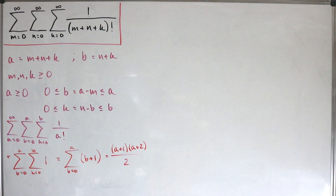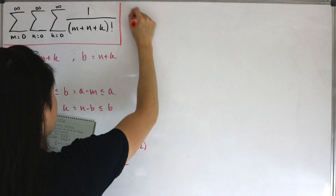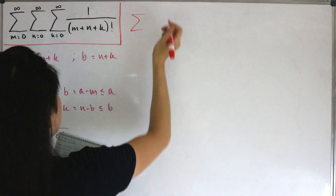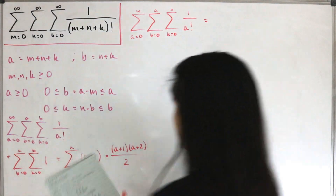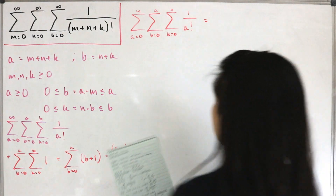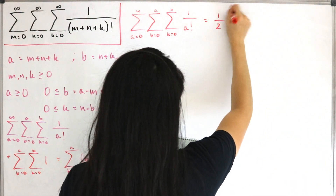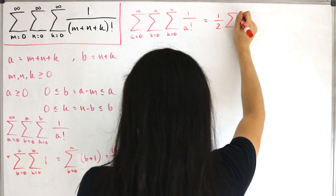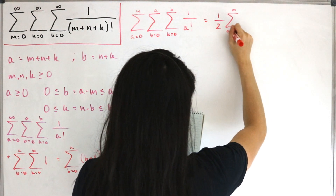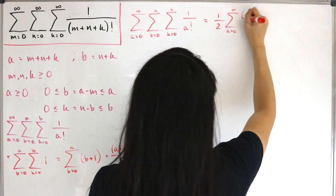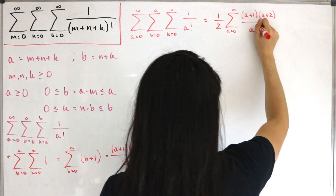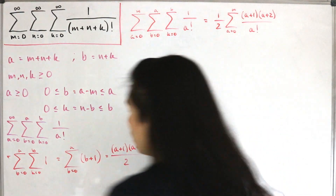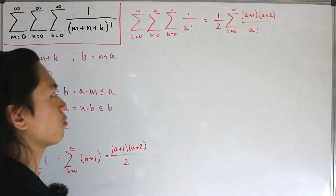Putting that substitution back in, the triple sum reduces to a single sum. Factoring out the one-half, we have one-half times the sum from a equals zero to infinity of (a+1)(a+2) divided by a factorial.